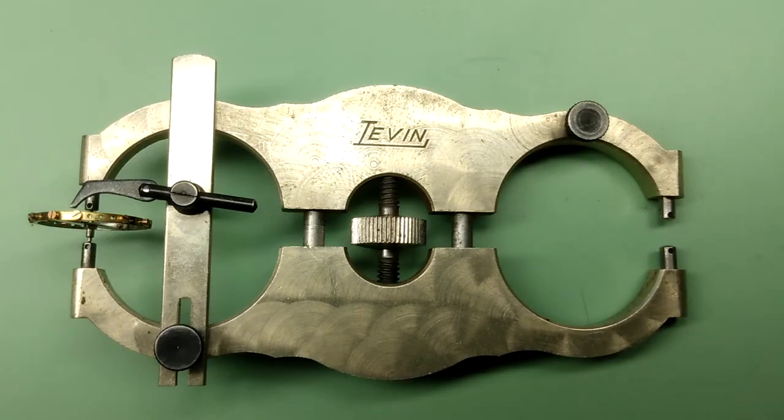Hi folks, today I'm going to be using a balance truing caliper to true in the flat the balance wheel of my Illinois Bunn Special.